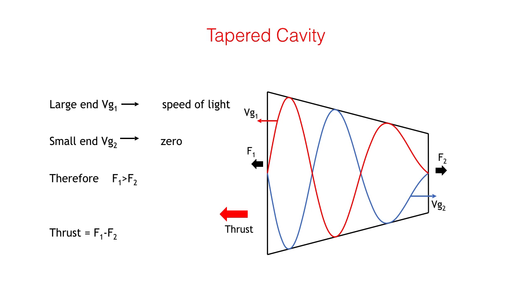Clearly, the end forces in a constant diameter cavity will cancel each other out. However, if the cavity is tapered, the force at the larger end, F1, will be greater than the force at the smaller end, F2. A net force on the cavity will therefore exist, which we call thrust, where thrust equals F1 minus F2. In a well-designed cavity, the group velocity at the large end, Vg1, approaches the speed of light, whilst that of the small end, Vg2, approaches zero.